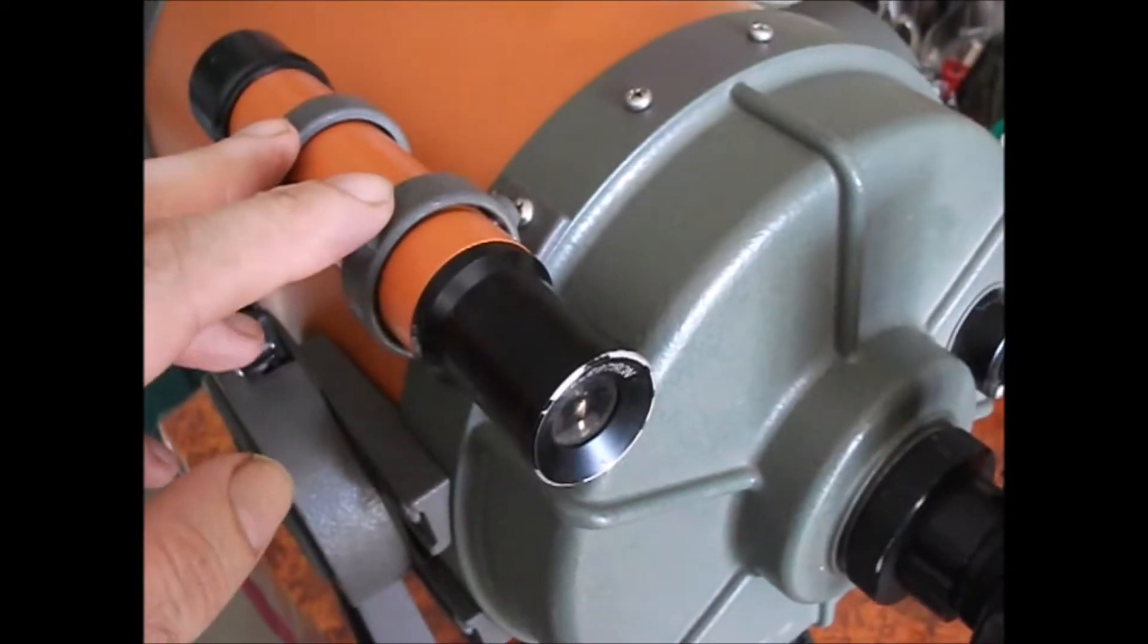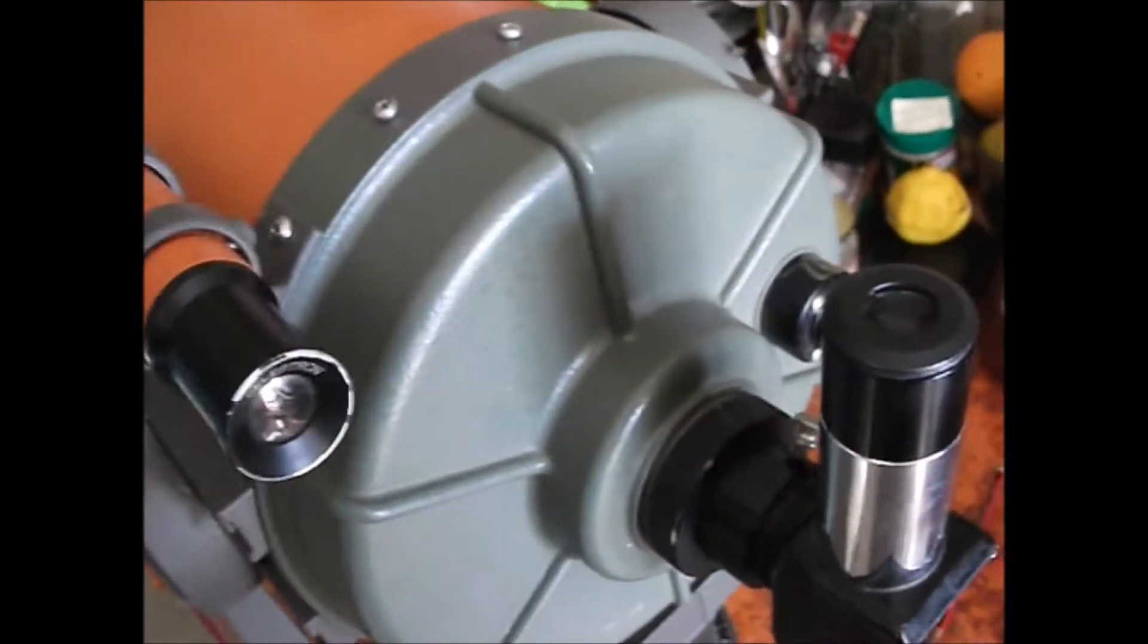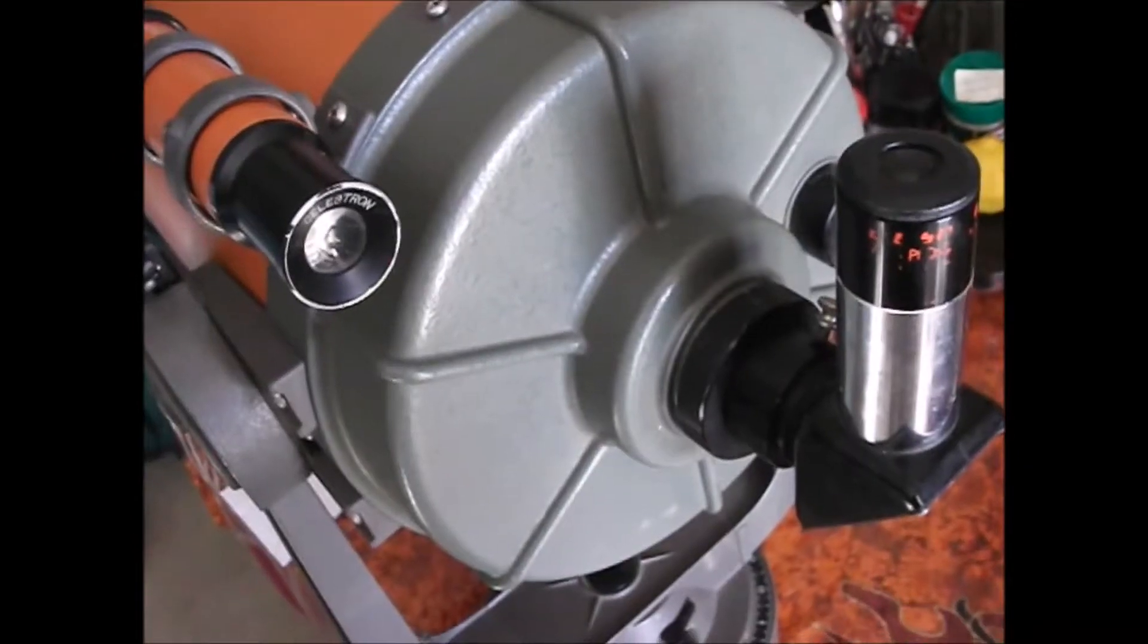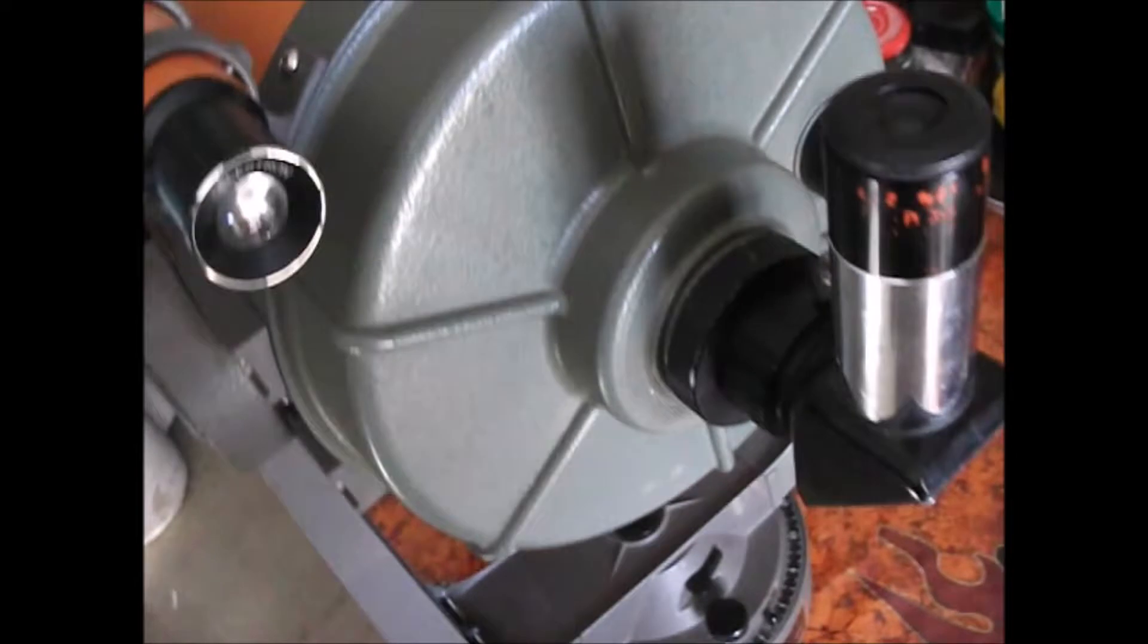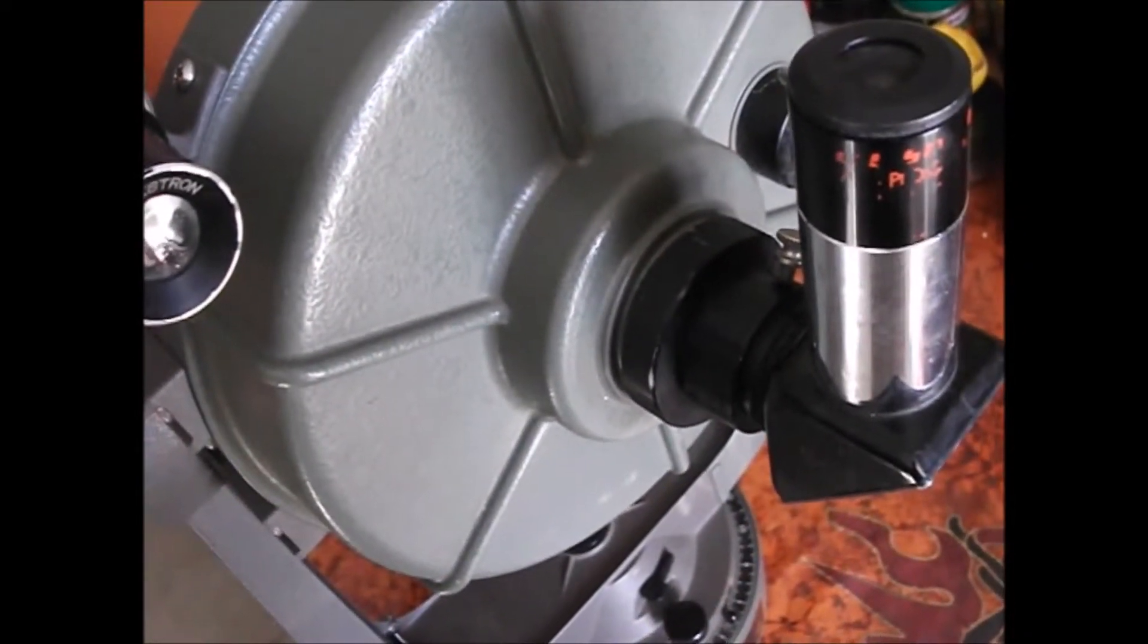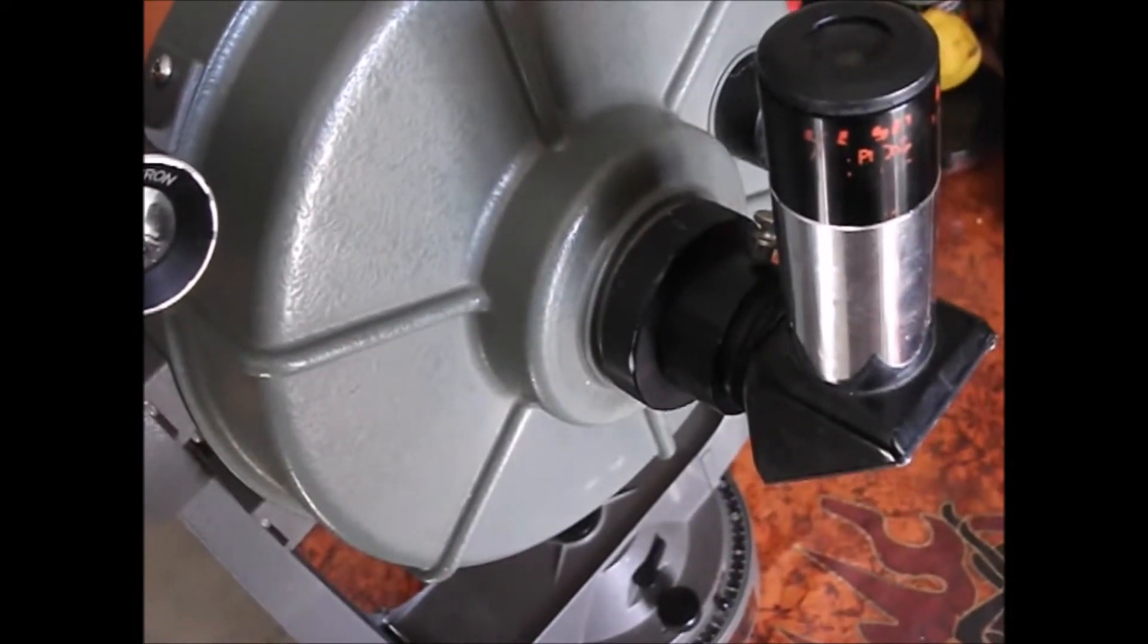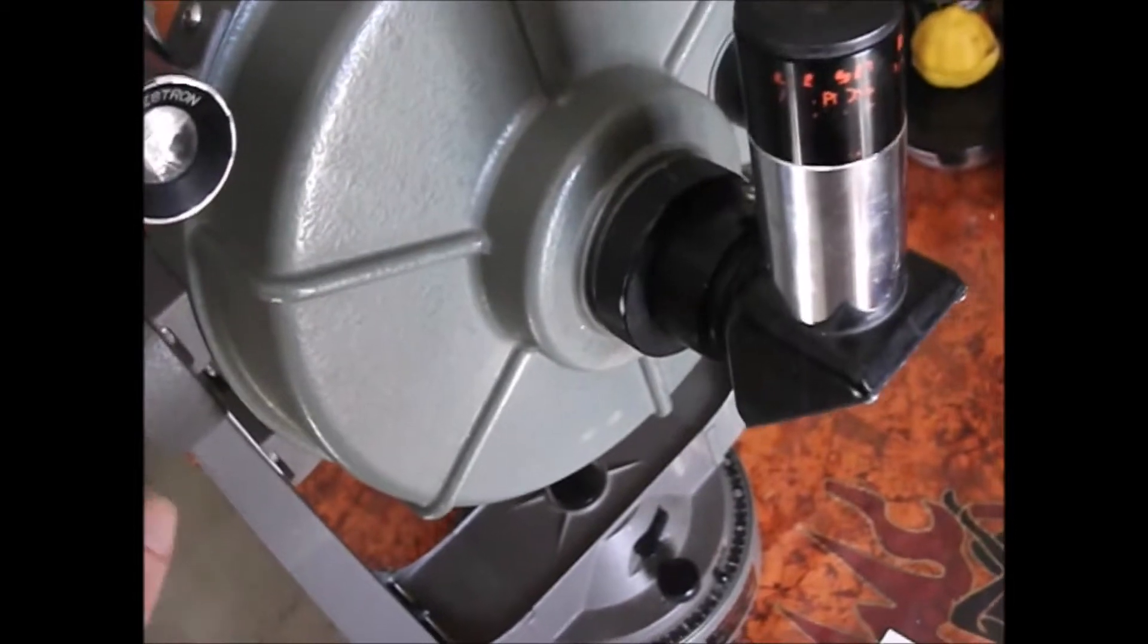So the finder scope is used to help locate an object so that it can then be viewed with the main telescope. In order to check the alignment of the finder scope, the first thing you'll need to do is pick a reference point in the distance. It'll need to be preferably a land-based object like a building or a tree or a lamppost, and it'll need to be around about 400 yards away.